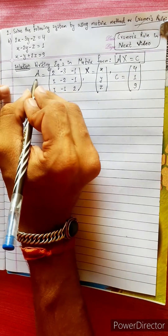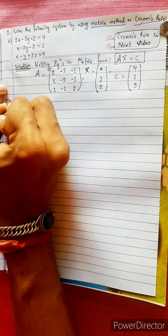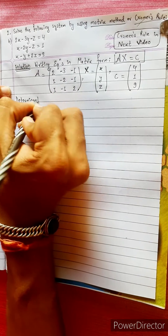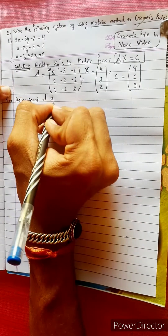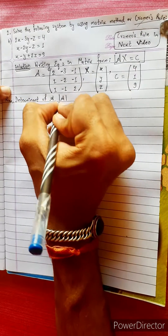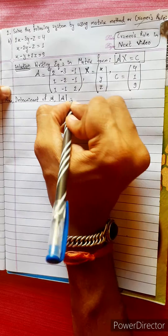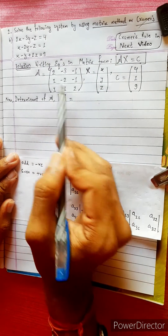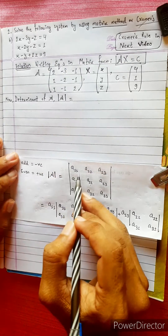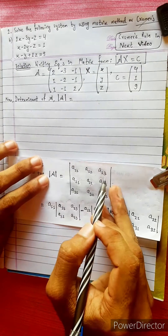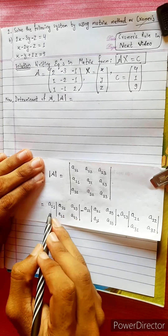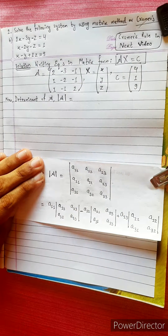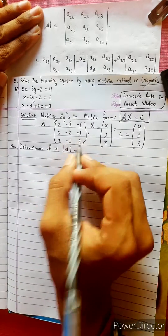Now this is called the determinant. We find the determinant of A. A-bar equals to this formula. The matrix has a first column, second column, and third column, represented by row and column. We need to put values into the formula. This formula uses a1, a2, a3 notation.